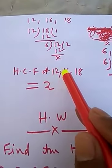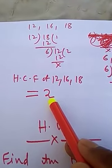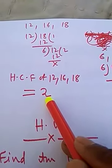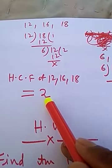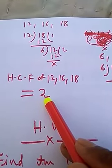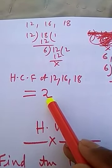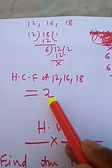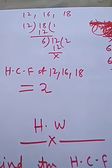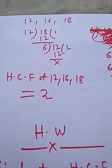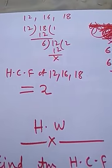The HCF of 12, 16, and 18 is equal to 2. So, if we have to find the HCF of two or more numbers, we take any two numbers, find their HCF, then find the HCF of that result with the next number. The last divisor is the HCF of all the numbers. I hope all of you are able to understand the continued division method.